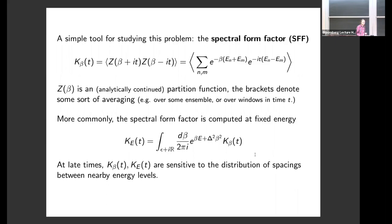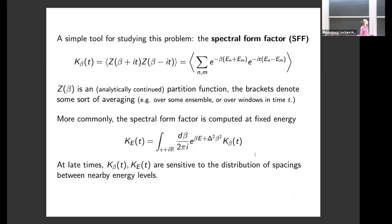What we're going to do doesn't depend much on how we average. Writing out the partition functions as sums over states gives an expression for k_beta. In the field of quantum chaos, people more commonly consider the fixed-energy version k_E, obtained by integrating over beta in the imaginary direction and fixing the energy around some window with width delta. The reason we study the spectral form factor is that at late times k_beta and k_E are sensitive to the distribution of spacings between nearby energy levels.